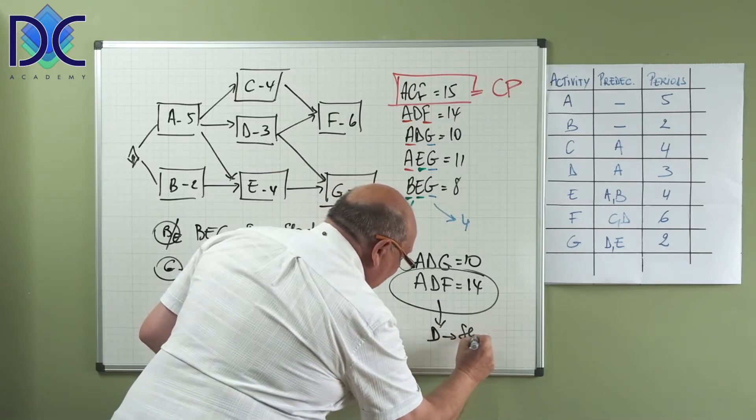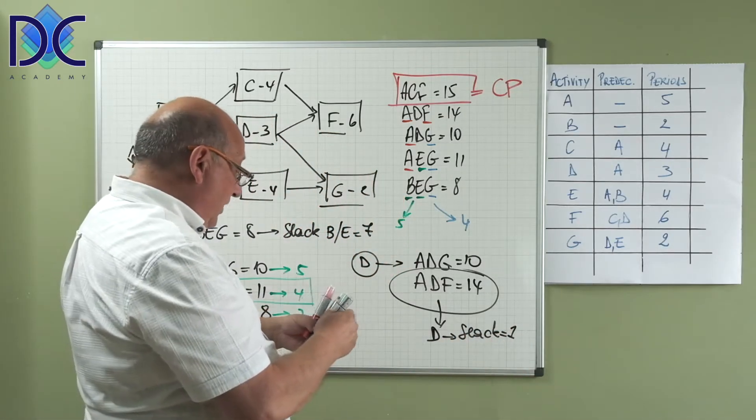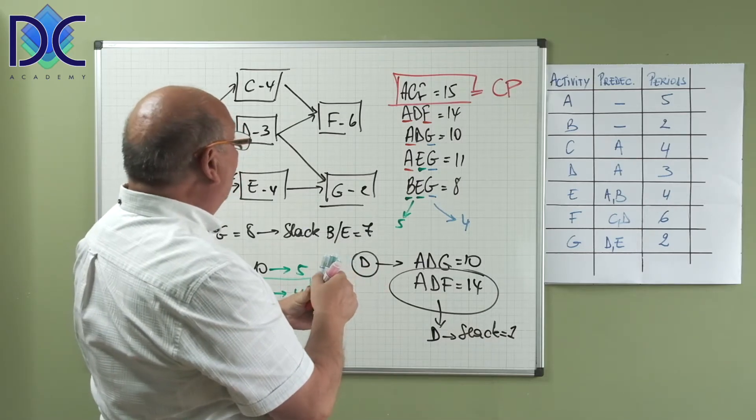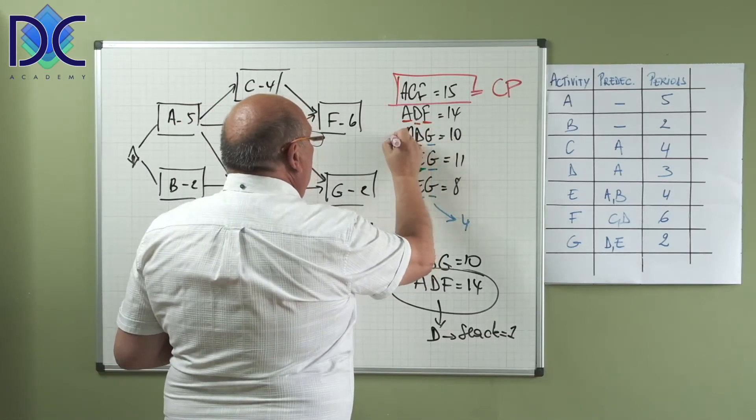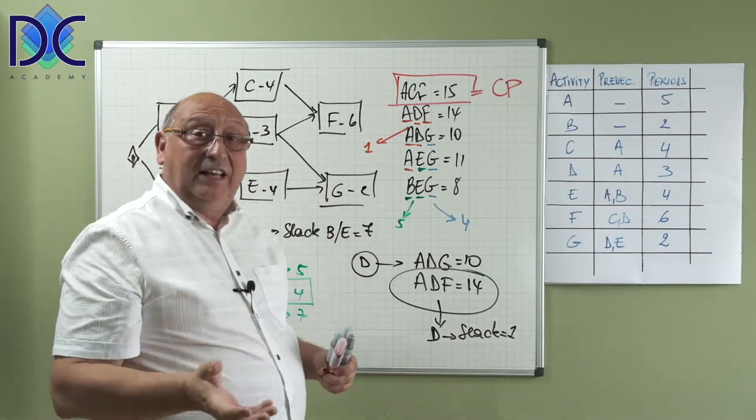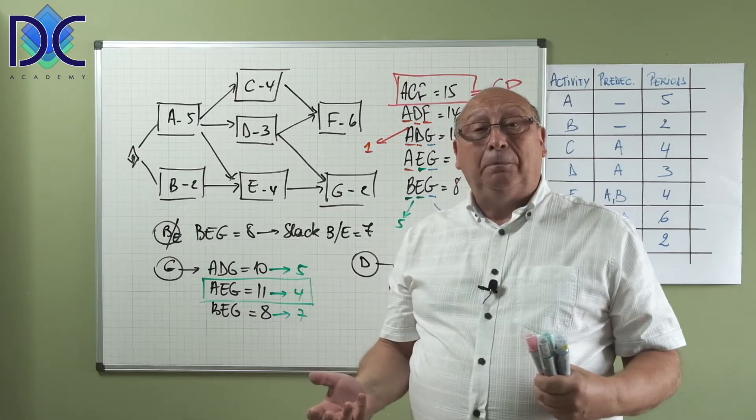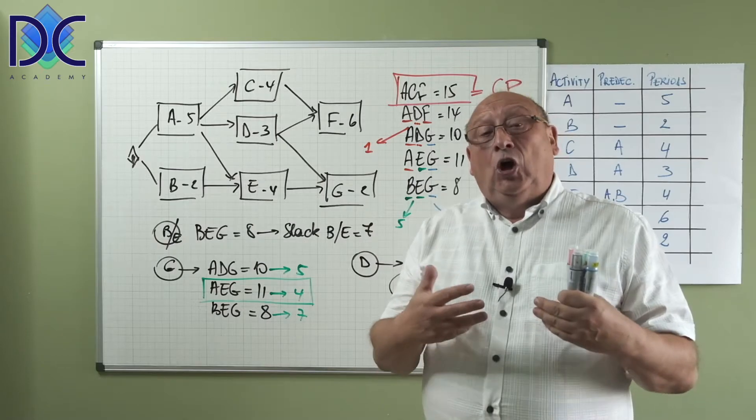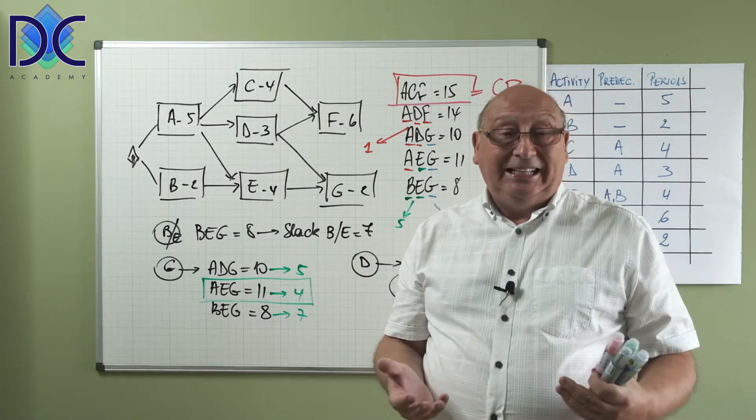D has a slack equal to 1. So now we have all of them. Basically, when we have activities which are not on the critical path but are on different paths, we have to find the longest path on which that activity is and then compare it with the critical path.